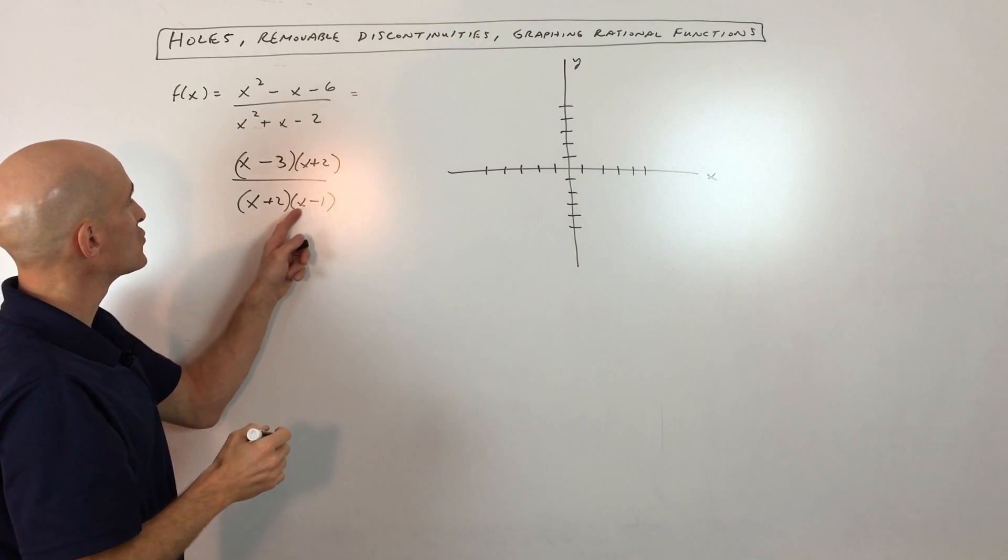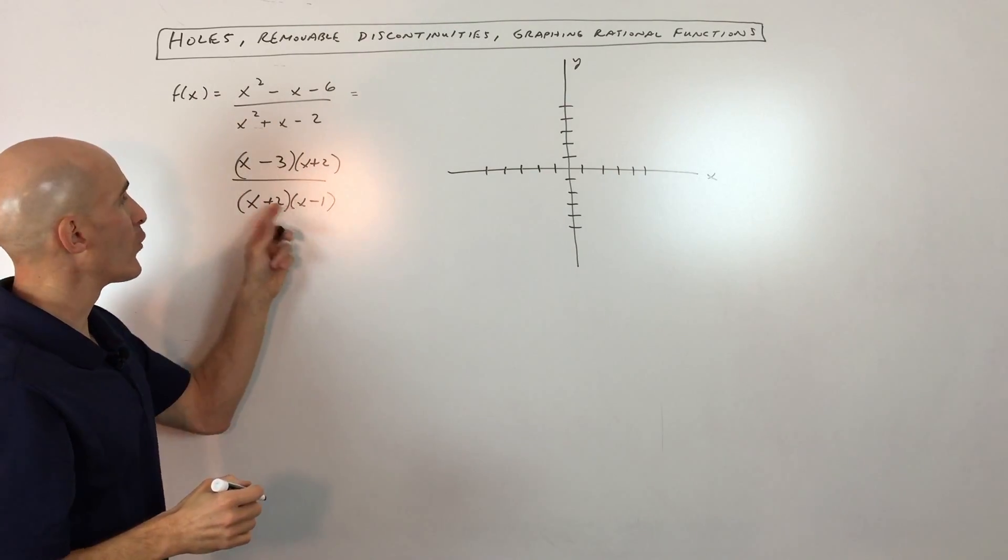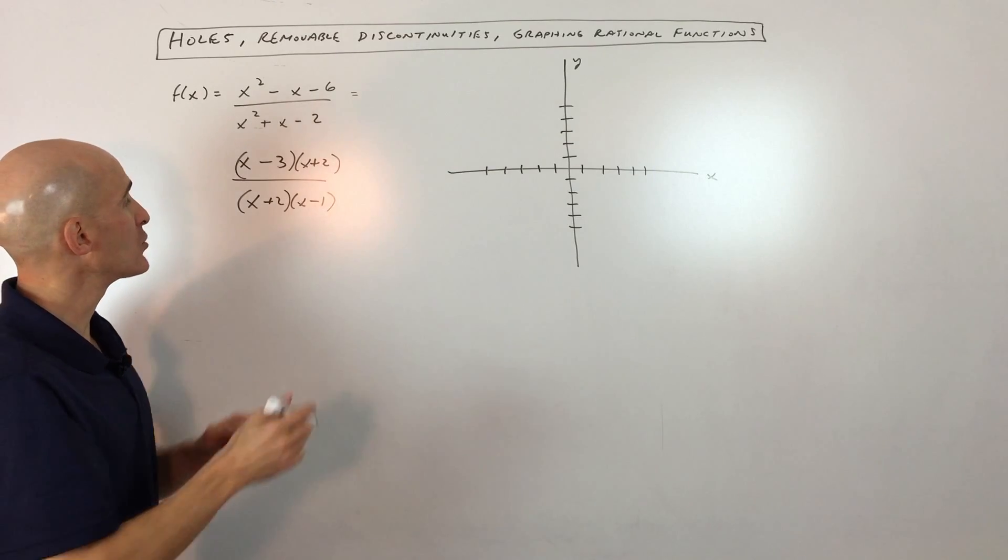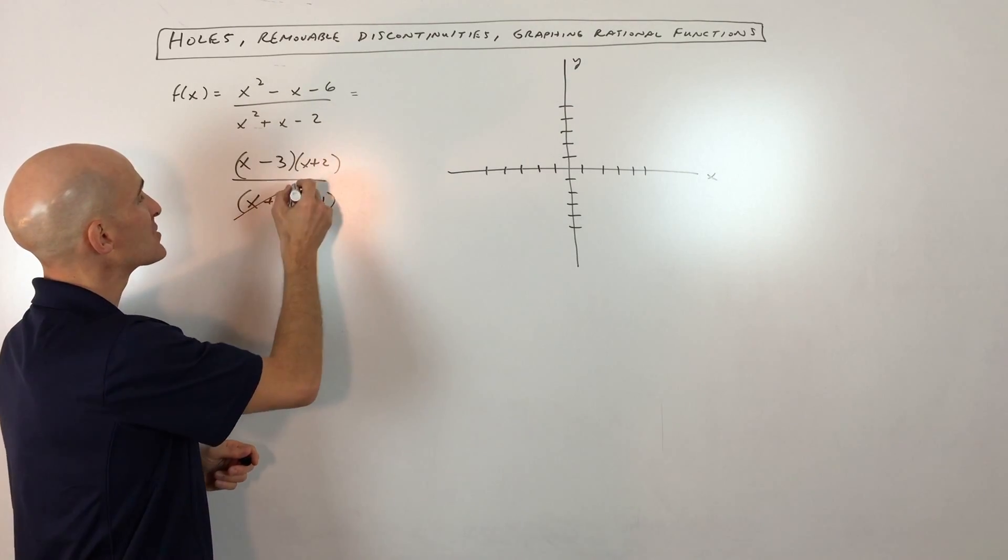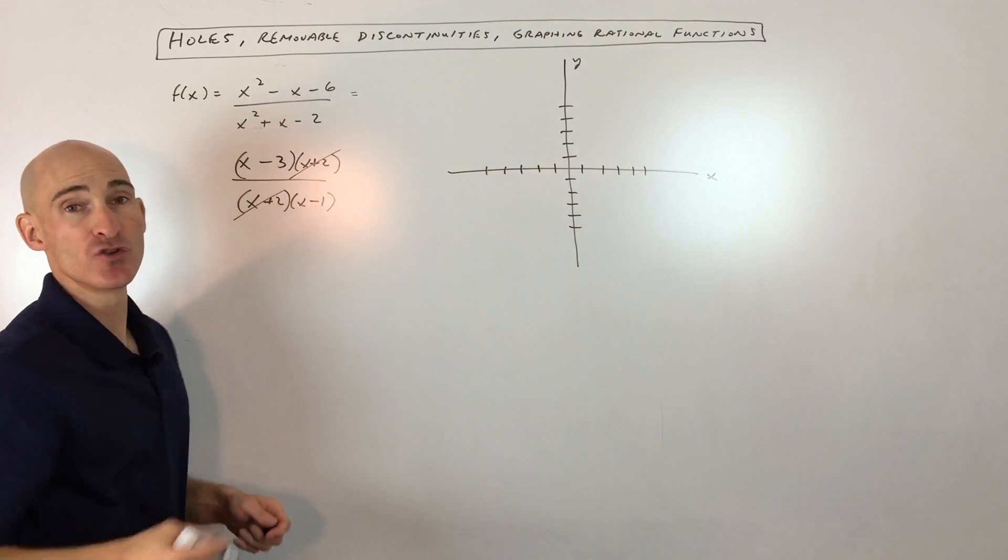You can see this is 2x, negative 1x, it adds up to the middle term 1x. You can FOIL it to make sure you factored it correctly, but what you'll notice is that the x plus 2 factor cancels in the numerator and denominator.